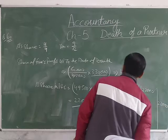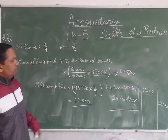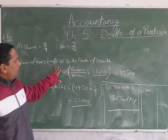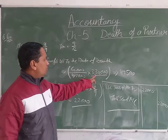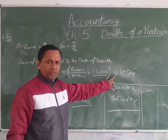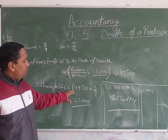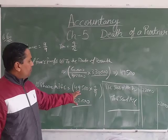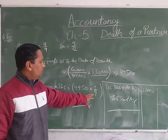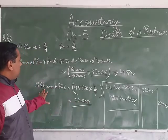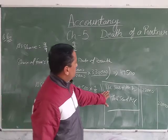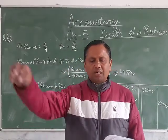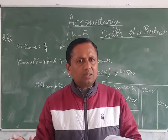So in this question, this is the way to calculate the share of profit when sales are given. The formula is: profit of last year upon last year's sales, multiplied by sales up to the date of death — this gives profit up to the date of death. After that, we calculate the deceased partner's share. A's share of profit is 22,000. The journal entry is: Profit and Loss Suspense Account debited to the capital account, being deceased partner's share of profit transferred to capital account. Thank you and have a nice day.